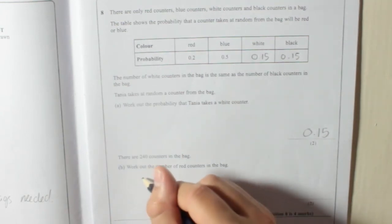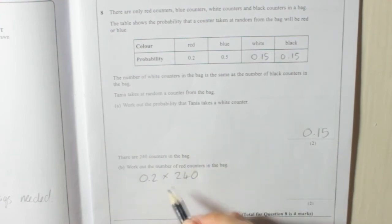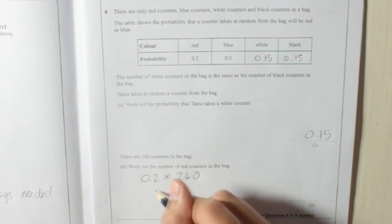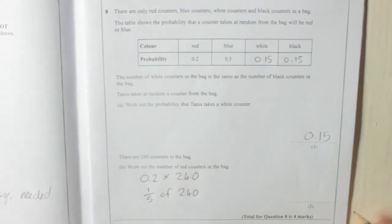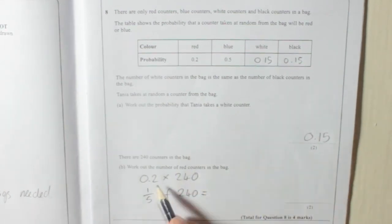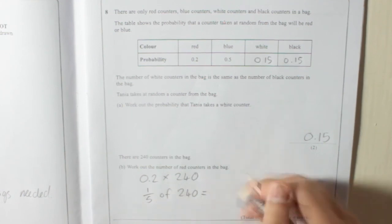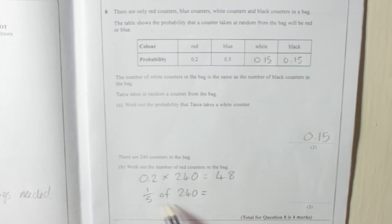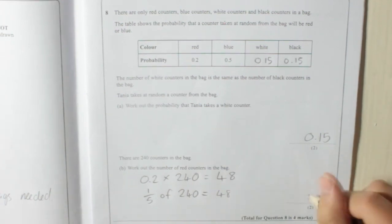So 0.2, we need to find 0.2 of 240. Because that's what times is. Of is like times. So 0.2 of 240. If it helps you, you can think of 0.2 as being a fraction, which is 2 out of 10, which is one-fifth of 240. Both will give you the same thing. So working out like this, 2 times 240 is 480. Divided by 10 is 48. And obviously 240 divided by 5 is 48. So that's how many there are, 48.